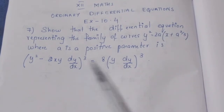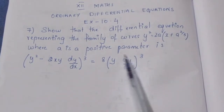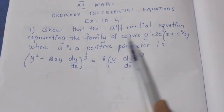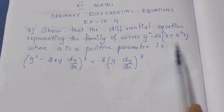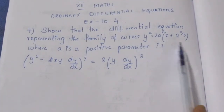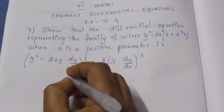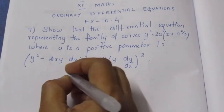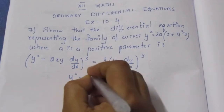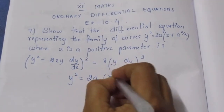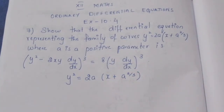We will prove this. We differentiate y² = 2a(x + a^(2/3)) with respect to x. Here, what we have to do is go and differentiate.